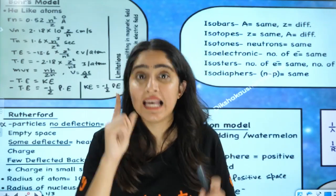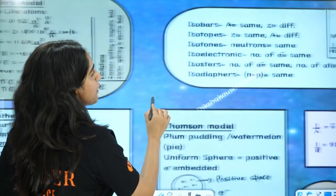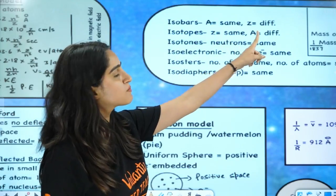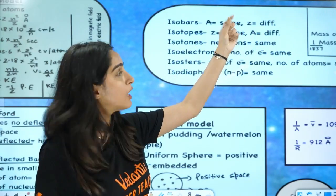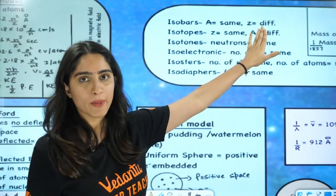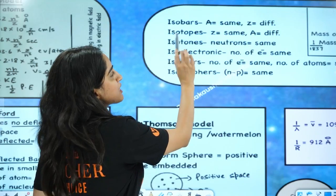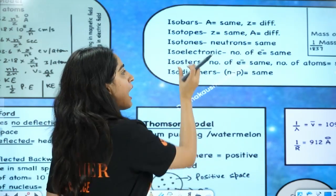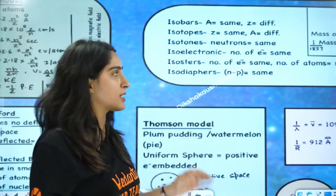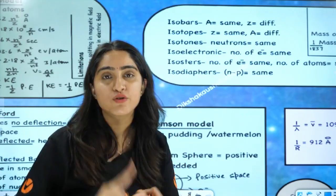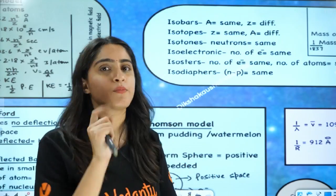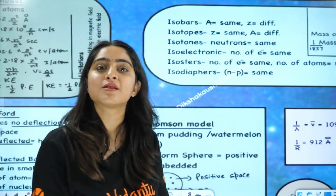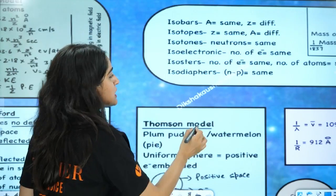Next, we have isobars. Iso means same. Isobar: A same, Z different. Isotopes: Z same, A different. Isotones: neutrons are same. Isoelectronic: electrons are same. Isosters: number of electrons are same and number of atoms are also same. Isodiaphers: number of neutrons minus number of protons are same.